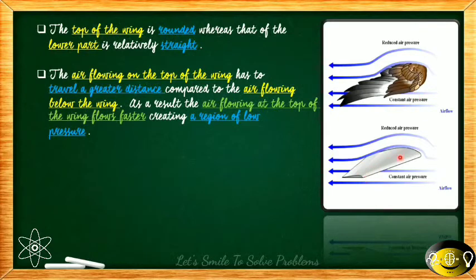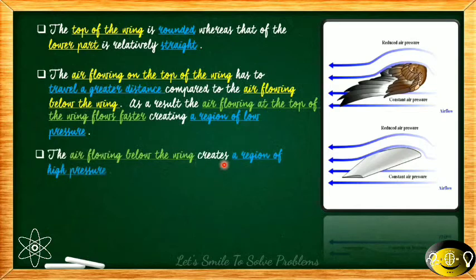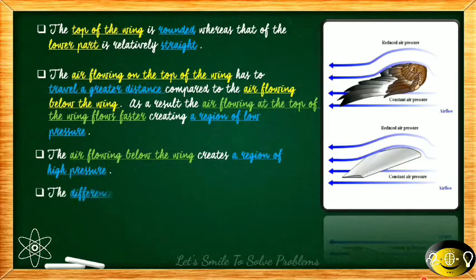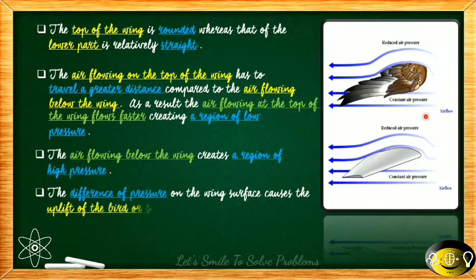This applies to the aircraft as well — that is the third point of similarity between birds and aircraft. The fourth point is that the air flowing below the wing creates a region of high pressure, since it is moving over a smaller, straighter area. The fifth point is that this difference in pressure — reduced pressure above and high pressure below — lifts both the bird and the aircraft upward.